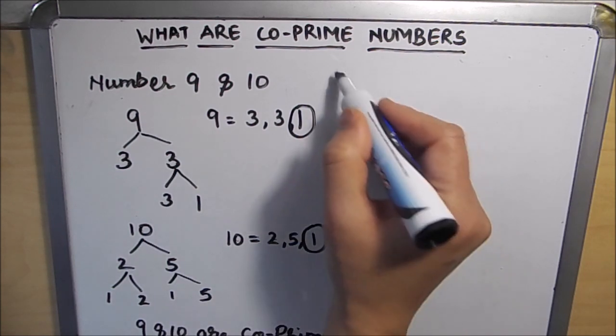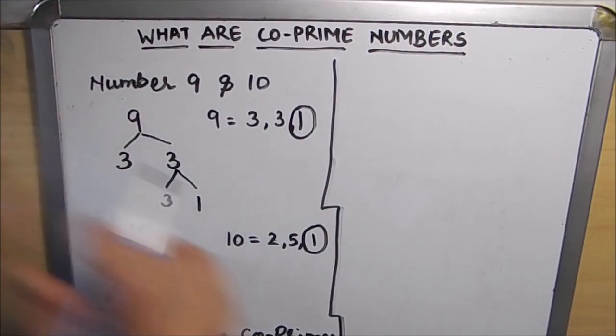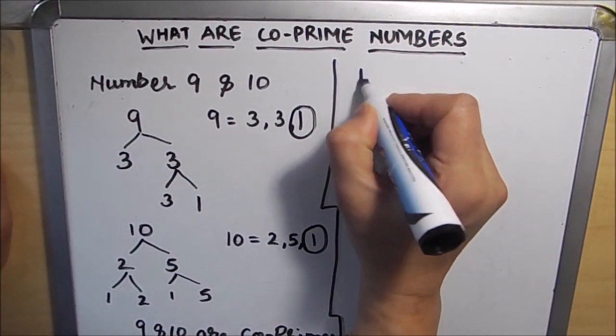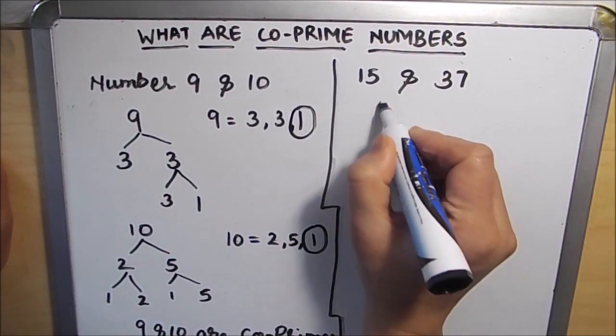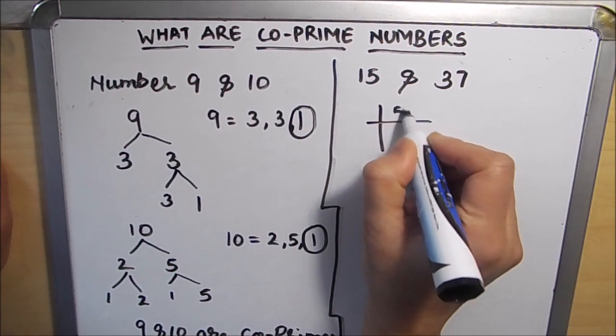Let's take another example. Let's take 15 and 37 here. 15 and 37. So first we will find the factors of 15.